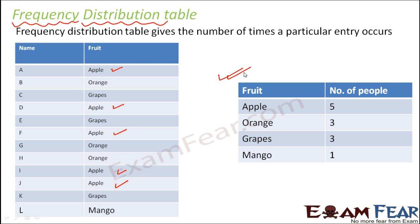Now, if I ask you to tell me which is the fruit liked by most of the people, looking at this frequency distribution table, do you think you will be able to answer at once? Of course! Because quickly looking at this table, you can see that apple has the maximum frequency, and therefore apple is liked by most of the people. Similarly, mango has the minimum frequency — it is liked by very few of them. So we can say instantly that apple is the most liked fruit and mango is the most disliked one.